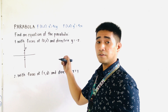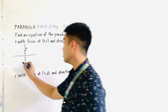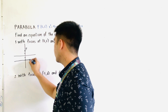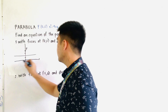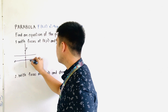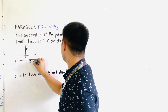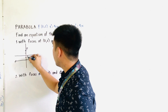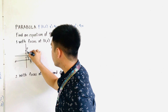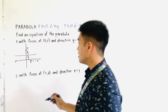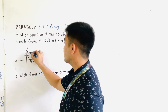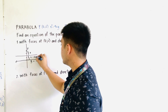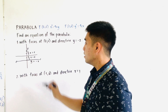The graph of the directrix is horizontal. This is our directrix at y = negative 2. This is the value of c, which is 2. Both the distance from the vertex to the focus and from the vertex to the directrix equal c = 2.